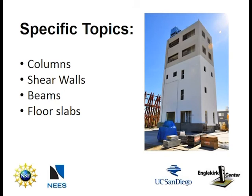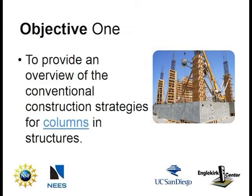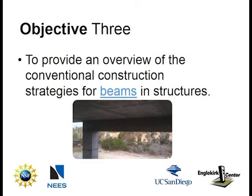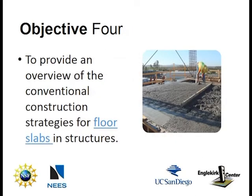Specific topics that will be discussed include the construction of the columns, shear walls, beams, and floor slabs. The first objective is to provide an overview of the conventional construction strategies for columns. The second objective is to offer an overview for shear walls. The third objective is to introduce conventional construction strategies for beams, and the fourth objective is to explain conventional construction strategies for floor slabs in structures.